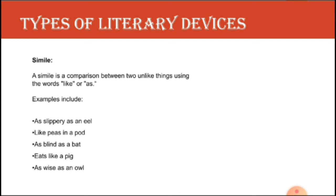A simile is a comparison between two unlike things using the words 'like' or 'as.' If you find 'like' or 'as,' then it is a simile — but the comparison is of two things that are totally unlike each other. Examples: 'as slippery as an eel,' 'like peas in a pod,' 'as blind as a bat' — meaning a bat and your eyes have no connection but are compared here. 'Eats like a pig,' 'as wise as an owl' — these comparisons are made between two unlike things.